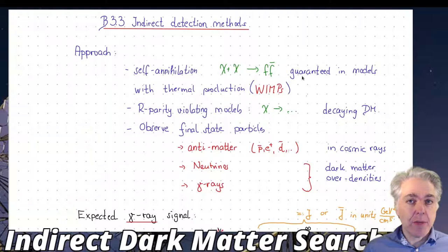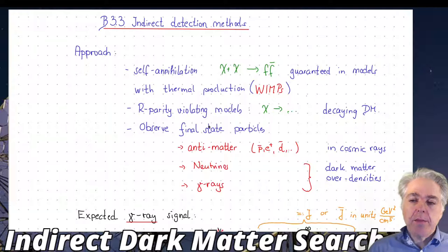The only thing which we do not understand exactly is where the dark matter would self-annihilate, so how much dark matter is present in a dwarf galaxy. However the cross-section is fixed and that's nice.